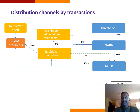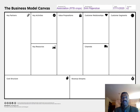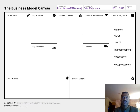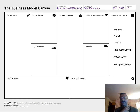Moving forward to the business model canvas, the major customer segments are farmers, NGOs, NARIs, international organizations, root traders, and root processors. The first four categories are the major customer segments for seed, while root traders, farmers, and root processors are the major segments for roots. My previous version focused only on the seed market, but since this is a vegetatively propagated crop and most farmers still source seeds for free, I needed to reconsider.